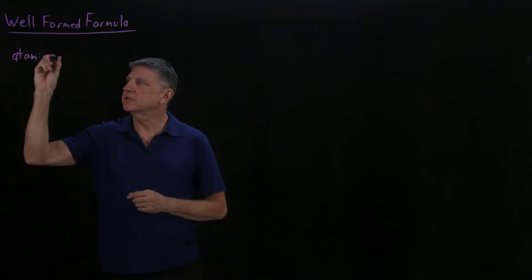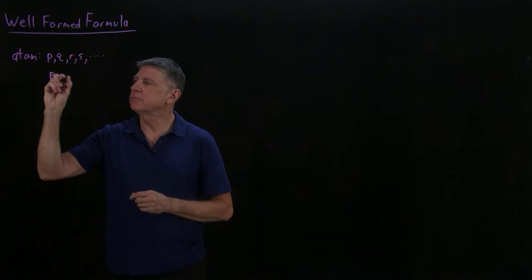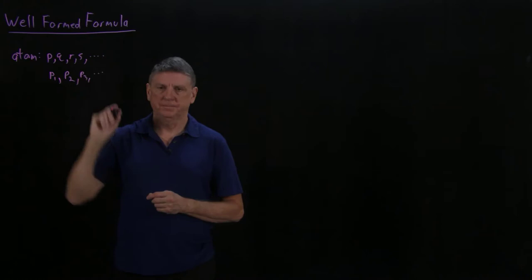An atom, for our purpose, is a symbol such as P, Q, R, S, and so on for as many as we need. And we might subscript them. For example, we might say P1, P2, P3, and so on.